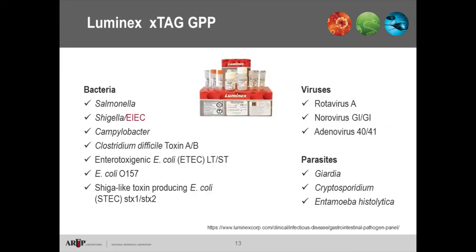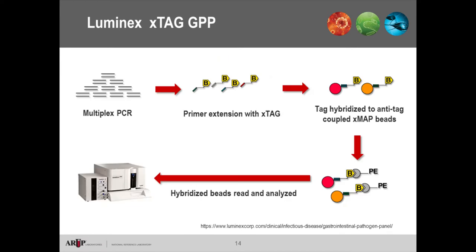Going even broader, the Luminex xTAG GPP assay has a large collection of bacteria, additional viruses beyond Verigene, and the three parasites seen on the BD MAX panel. This assay uses an upfront multiplex PCR, proprietary primer extension with the xTAG system patented by Luminex, and hybridization to patented xMAP beads. A bead-based cell sorting with fluorescence then identifies which analytes are detected.